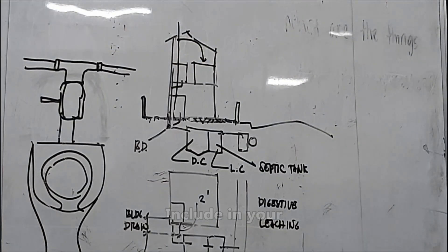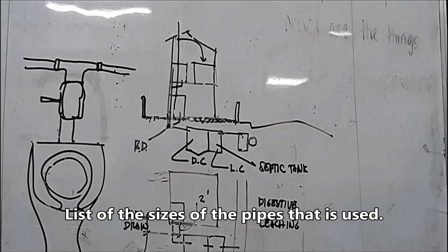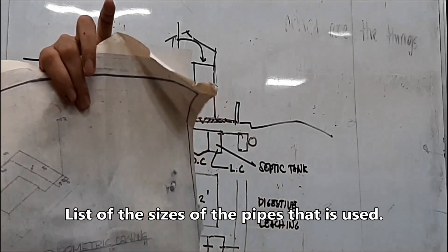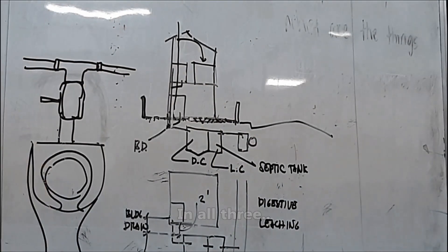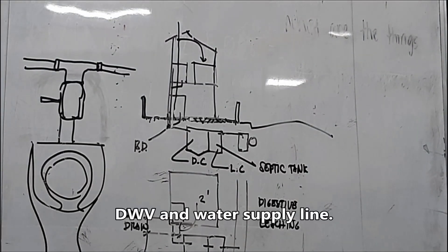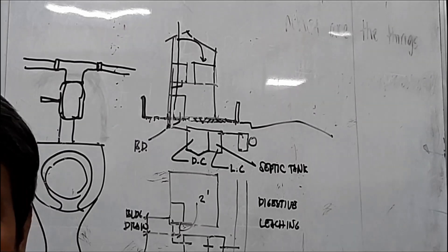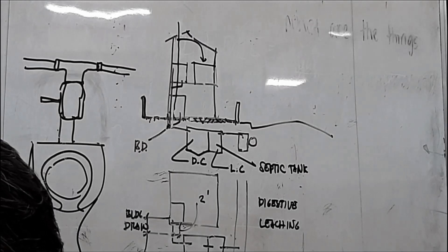Include in your list the sizes of the pipe that is used — all three: storm water, DWV, and water supply line.